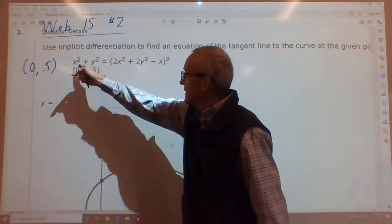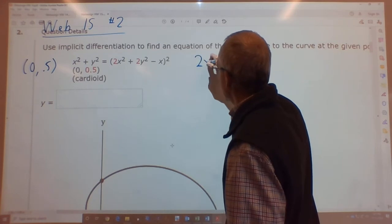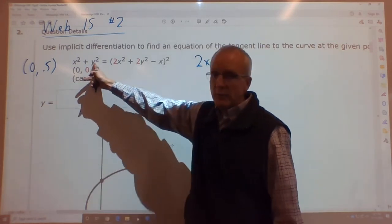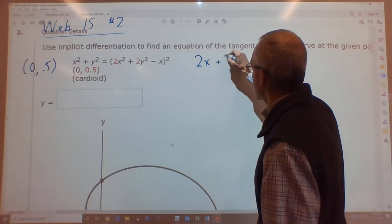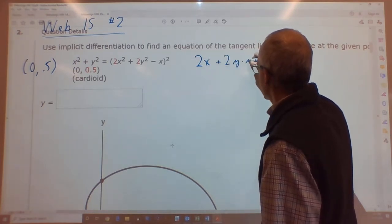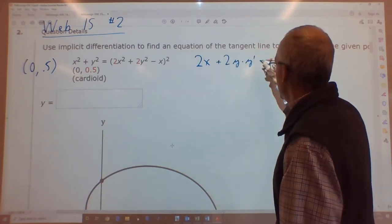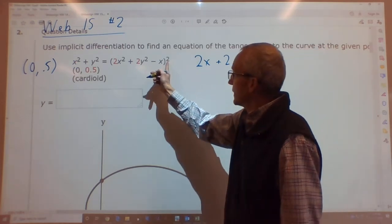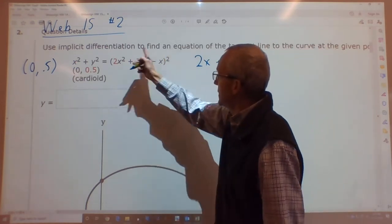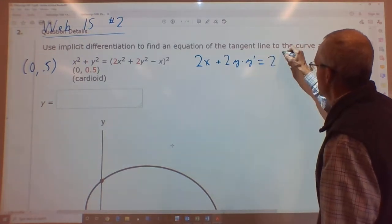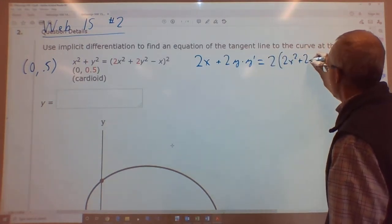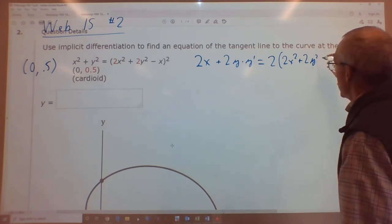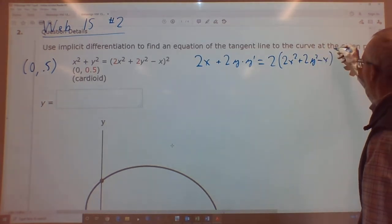So looking at this, the derivative of x² is 2x, the derivative of y² is 2y times y'. So 2x + 2y·y' equals... this is something squared, so it's 2 times that to the 1, so 2 times all that stuff: 2(2x² + 2y² - x)¹ times the derivative of what's inside.